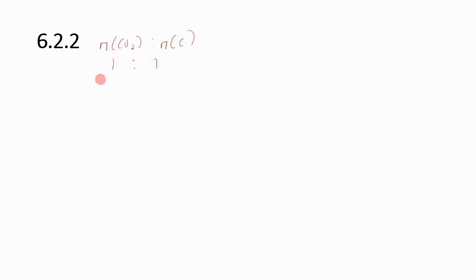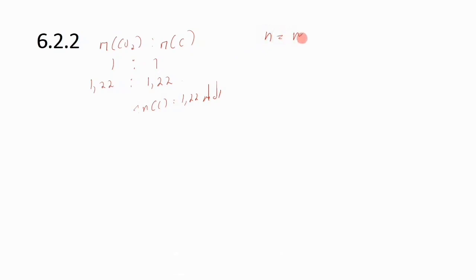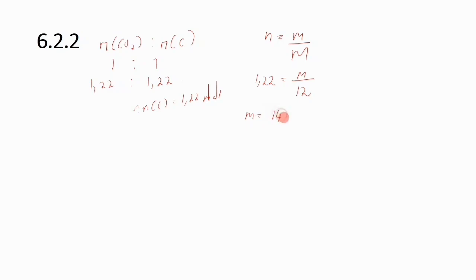The number of moles of carbon is 1.22 mol. Using n = m/M, with molar mass of carbon = 12 g·mol⁻¹: m = 1.22 × 12 = 14.64 grams.